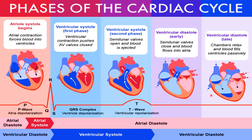On an ECG graph we see: the P wave, which represents atrial depolarization — that means atrial systole; followed by the QRS complex, which represents ventricular depolarization — ventricular systole; and then the T wave, which represents ventricular repolarization — ventricular diastole.